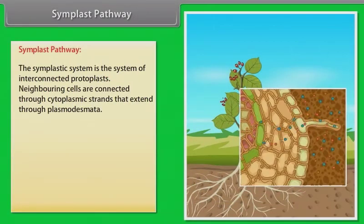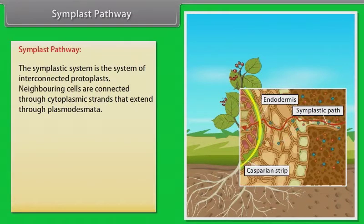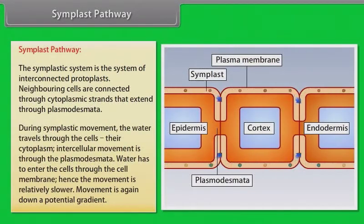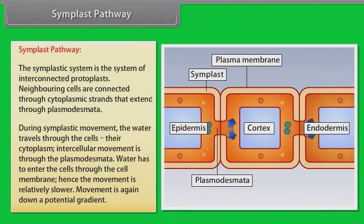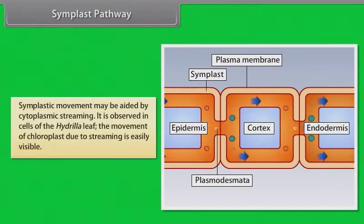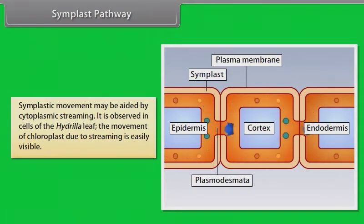The other pathway is the symplast pathway. The symplastic system is the system of interconnected protoplasts. Neighbouring cells are connected through cytoplasmic strands that extend through plasmodesmata. During symplastic movement, the water travels through the cells and their cytoplasm; intercellular movement is through the plasmodesmata. Water has to enter the cells through the cell membrane, hence the movement is relatively slower. Movement is again down a potential gradient. Symplastic movement may be aided by cytoplasmic streaming, which is observed in cells of the Hydrilla leaf — the movement of chloroplasts due to streaming is easily visible.